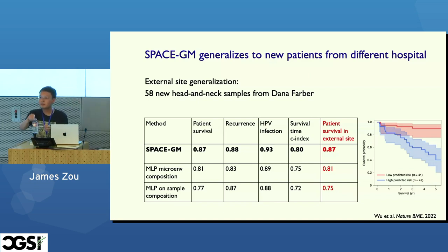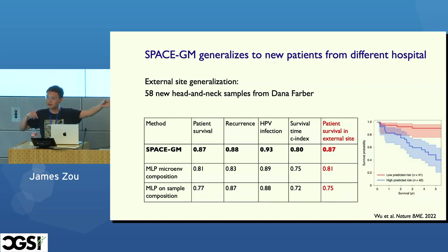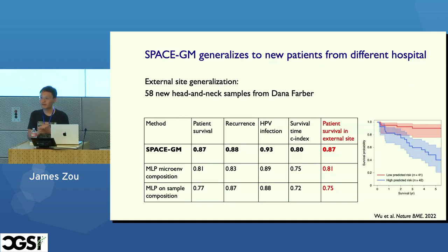On what microenvironment composition versus sample composition means: the second ablation represents each microenvironment by cell type composition rather than the learned graph embedding. This gives the same input data minus the local spatial structure. Removing that fine-grained spatial information causes the model to do worse, confirming that local spatial structure at the individual microenvironment level is actually quite important. On using CNN directly on the image instead: that approach does much worse, particularly for generalization — converting to a spatial cellular graph removes batch effects from imaging that differ across hospitals.